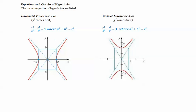So you have either horizontal transverse axis, and what does it mean? It means that it opens toward the x-axis horizontally. Or vertical transverse axis where it opens vertically up and down or left and right.